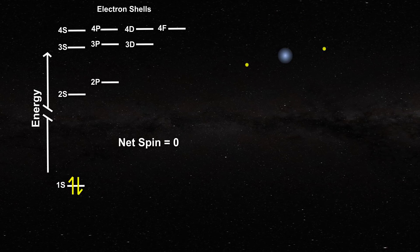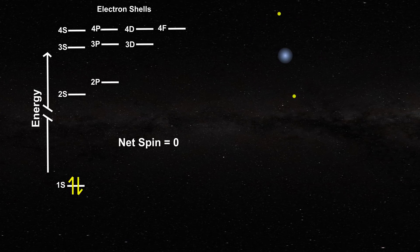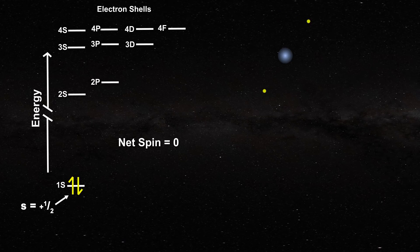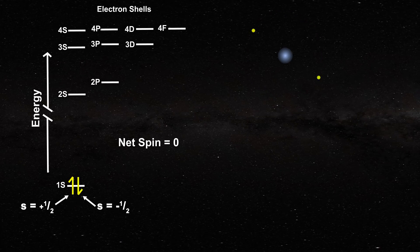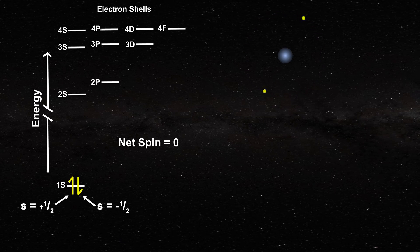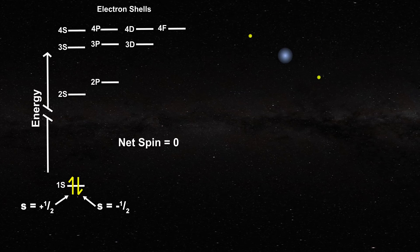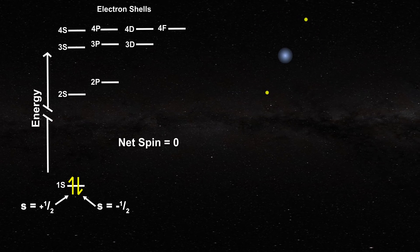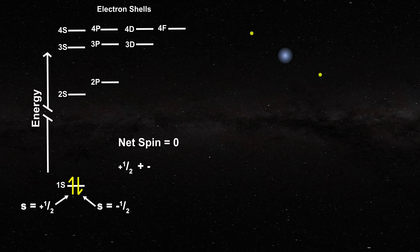If it is spin up, then we say that the spin is equal to plus one-half. If it is spin down, it is equal to minus one-half. You can see that the total spin is zero if both electrons are in the lower energy state. That is because one-half plus minus one-half is equal to zero.